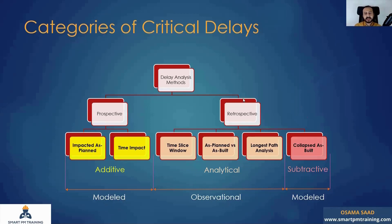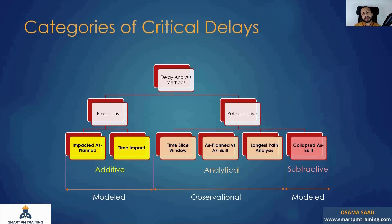The second category is the retrospective method — the opposite of the prospective method. In retrospective analysis, I deal with as-built information. I do not forecast or provide an early alarm. Instead, I investigate actual delays — for example, two months of delay in a particular schedule update — by going through all the details inside the program of work using a specific procedure.